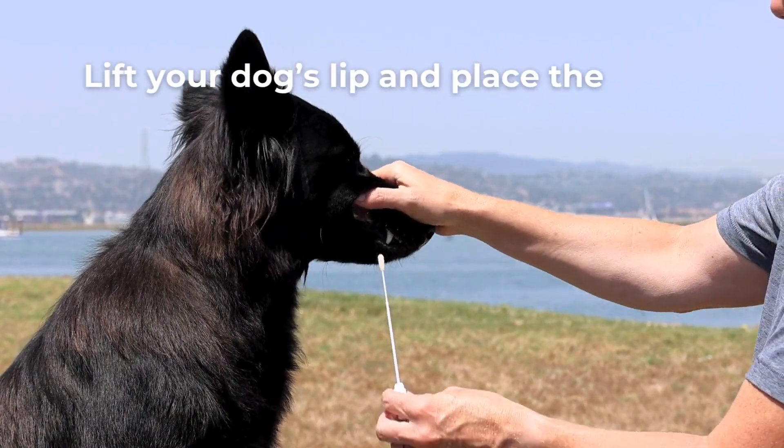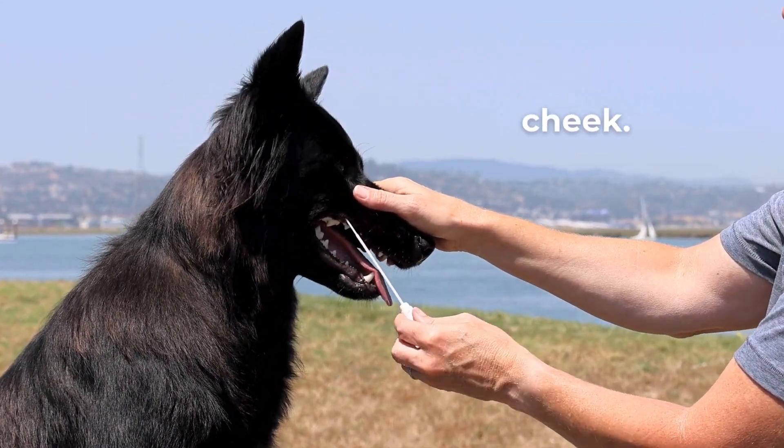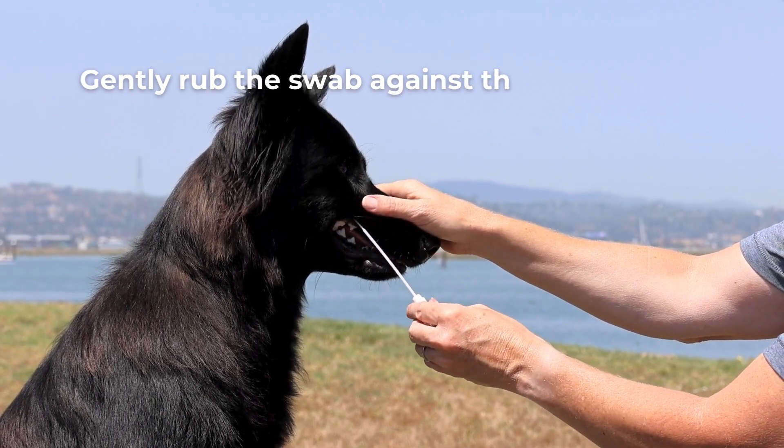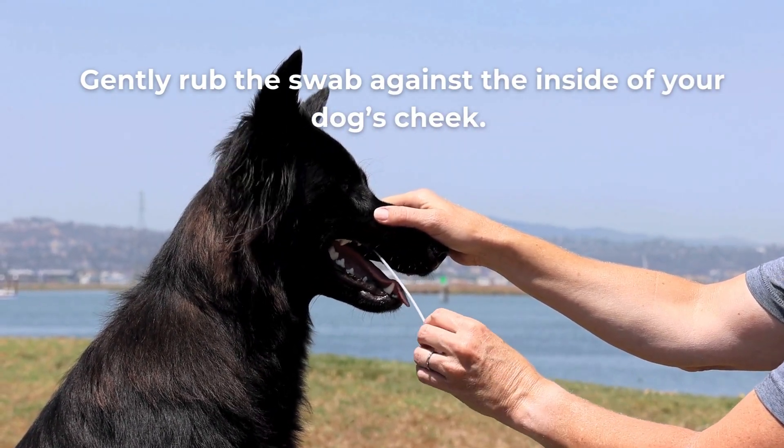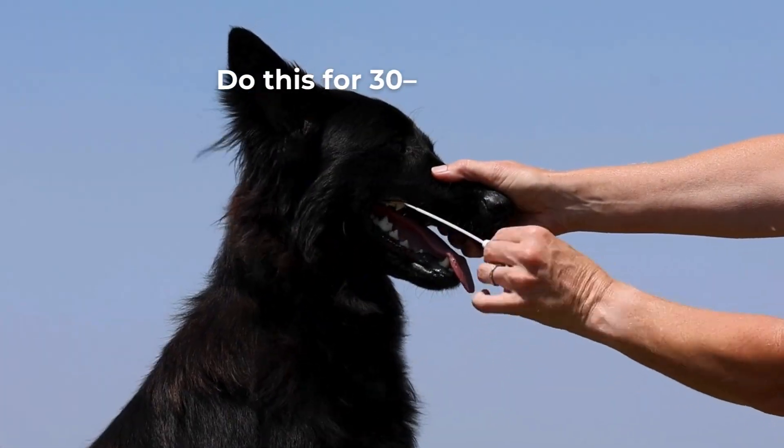Lift your dog's lip and place the swab between the gum and cheek. Gently rub the swab against the inside of your dog's cheek. Do this for 30 to 60 seconds.